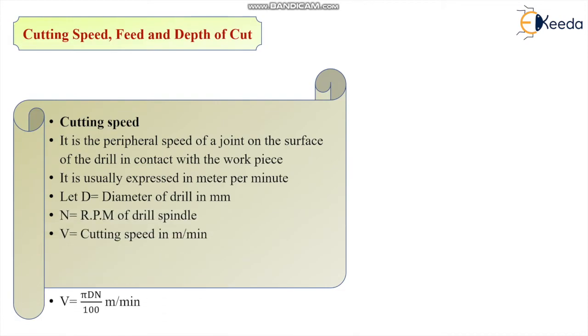Now we will see about cutting speed, feed, and depth of cut for this drilling operation. What is cutting speed for drilling? It is the peripheral speed of the drill on the surface of the drill in contact with the workpiece. This is the cutting speed, and it is usually expressed in terms of meter per minute. For the drill students, let us see the cutting speed. Cutting speed is the peripheral speed on the drill surface in contact with the workpiece, which is usually expressed in meter per minute. If D is the diameter of the drill in millimeter and it is rotating with RPM N, then the cutting speed V in meter per minute can be given as V = πDN/1000. It is 1000, not 100. πDN by 1000, meter per minute.